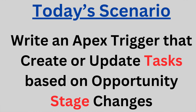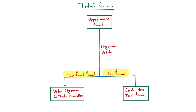Let's talk about today's scenario. We need to insert or update a task on change of opportunity stage name. Whenever an opportunity's stage name gets changed, there will be two situations: first, if a task record is already present on that opportunity, we need to update the stage name in the task record's description. And if there are no records present, we need to create a new task record.